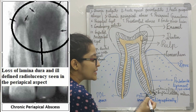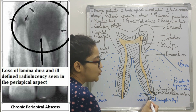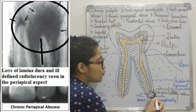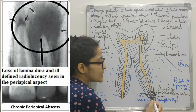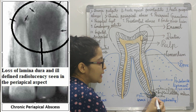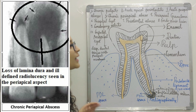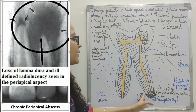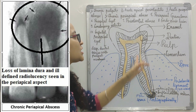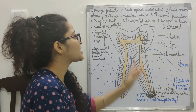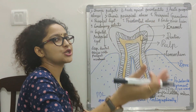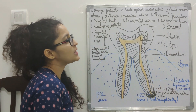Coming to chronic periapical abscess — you will see loss of lamina dura, and because there will be pus collection outside, you will see a diffuse radiolucency in the periapical aspect. So you can write: ill-defined radiolucency seen in the periapical aspect in relation to this tooth, suggestive of chronic periapical abscess.